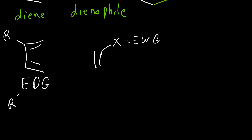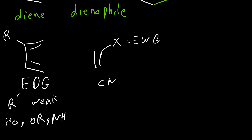Alkyl groups in general are weak electron-donating groups. Also OH, OR, and NH can be electron-donating groups. For electron-withdrawing groups on the dienophile, we can have cyanide, NO2, or any carbonyl compound like ketones, aldehydes, esters, or carboxylic acids.